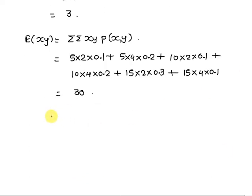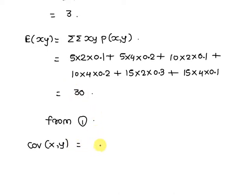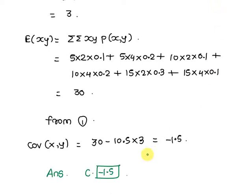Therefore, from equation one, we get the covariance between X and Y equal to 30 minus 10.5 times 3, and that is equal to minus 1.5. So the covariance between the random variables is minus 1.5, that is option C is the correct option. I hope you find this video useful. Thank you.